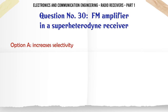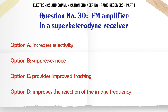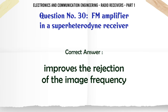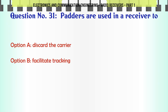RF amplifier in a superheterodyne receiver: A. Increases selectivity. B. Suppresses noise. C. Provides improved tracking. D. Improves the rejection of the image frequency. The correct answer is improves the rejection of the image frequency.